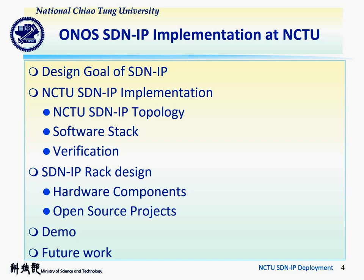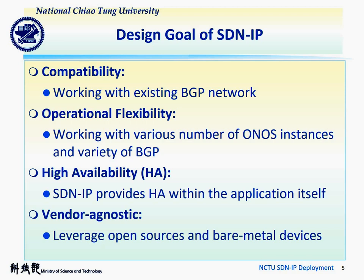SDNIP is built to achieve four goals: compatibility, operational flexibility, high availability, and vendor agnostic. Firstly, we have to ensure the deployment can communicate with a normal BGP router. We have therefore chosen the software router Quagga project as the BGP speaker.